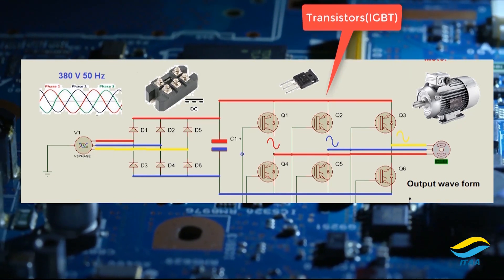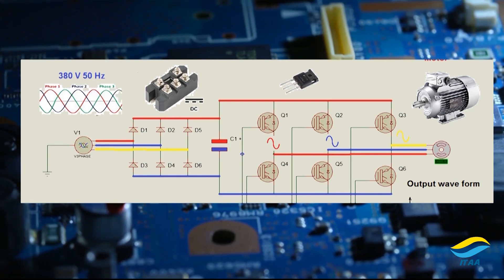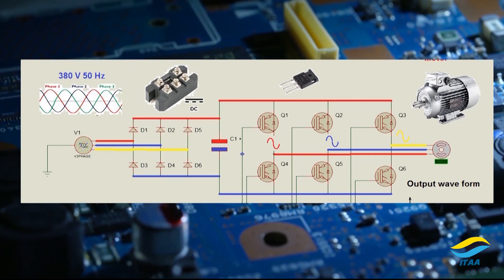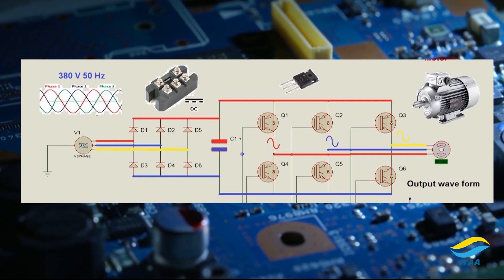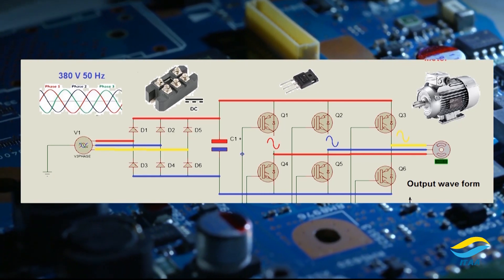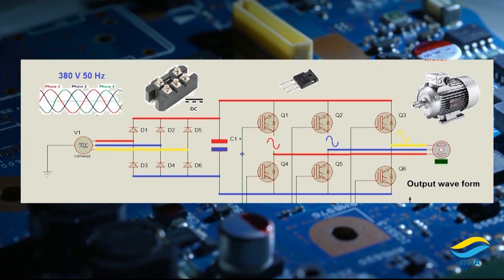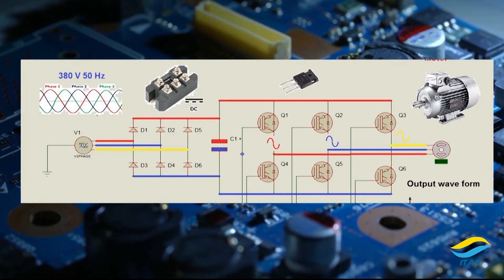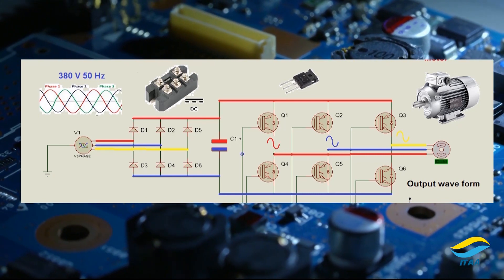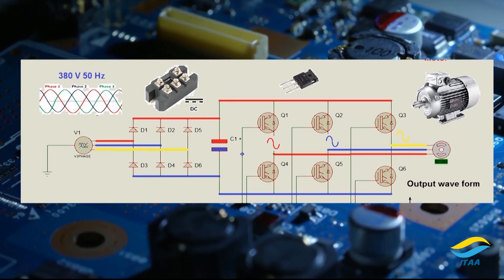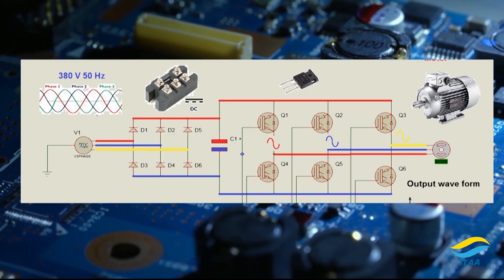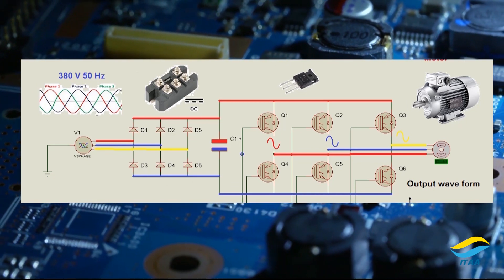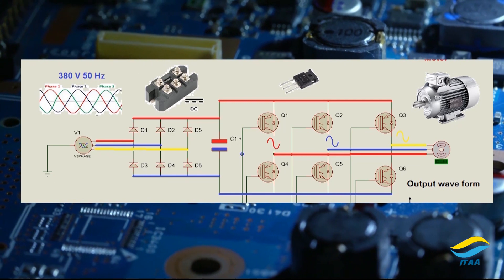By using these switches, we are actually controlling the frequency of the motor, which in turn controls the speed of the motor. As you know from the basics of physics, frequency is directly proportional to speed. If frequency goes high, speed will go high; if frequency goes down, speed will go down. By switching these IGBTs, we can create any frequency we like, and that frequency will vary the speed accordingly.